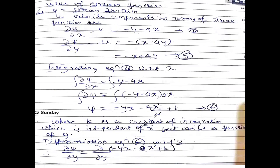Next, I need to find the stream function. Let ψ be the stream function. Writing velocity component formulas: ∂ψ/∂x = -v = -(-y - 4x) = -y - 4x... wait, ∂ψ/∂x = v, so ∂ψ/∂x = -y - 4x. This is equation number four. Similarly, ∂ψ/∂y = -u, so ∂ψ/∂y = -(x - 4y) = -x + 4y. This is equation number five.